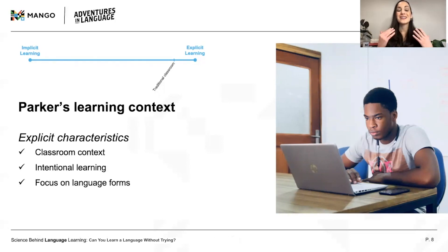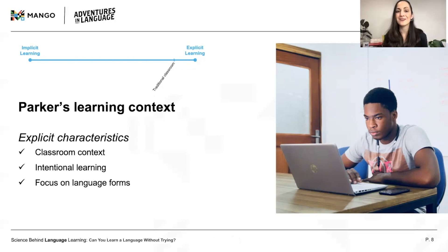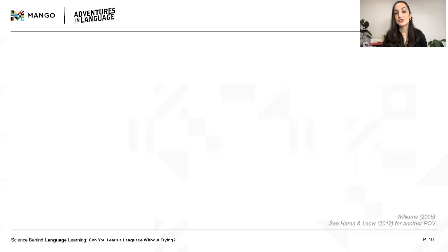This is a much more explicit learning context. Parker definitely pays attention and is very much aware that he's learning, and he even knows what he should be focusing on in a given lesson. But just as Alma's learning context doesn't guarantee implicit learning and knowledge, Parker's context doesn't guarantee explicit learning and knowledge. While Parker is paying attention to things like using the correct grammar and word order, he may be learning some other things about French without even realizing it. John Williams — the linguist, not the composer.